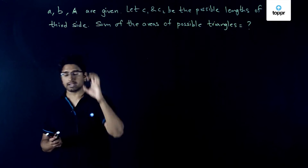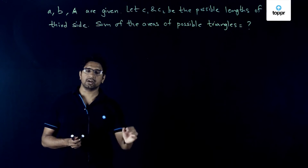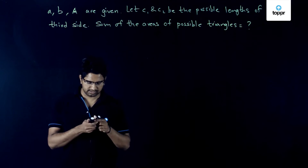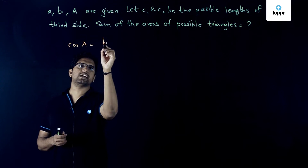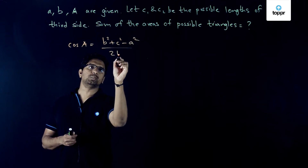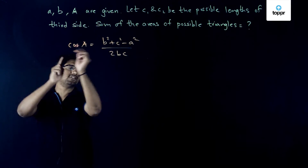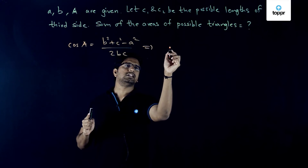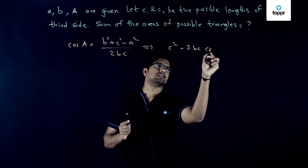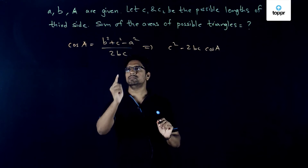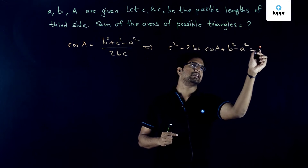For which angle should the cosine rule be applied? Since we are given the value of angle A, we use cos A. The cosine rule gives: cos A = (B² + C² - A²) / (2BC). This can be rearranged as a quadratic in C: C² - 2BC·cos A + B² - A² = 0.